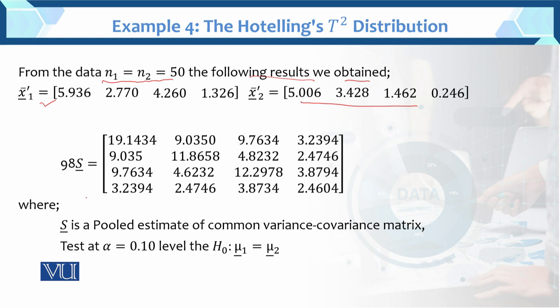And this is the sample covariance matrix, 98 multiplied by S. This is the sample covariance matrix where S is the pooled estimate of common variance-covariance matrix. Now we want to test at alpha 0.10 level and the hypothesis is two-sample hypothesis: mu1 equals mu2. This is the two-tailed test.